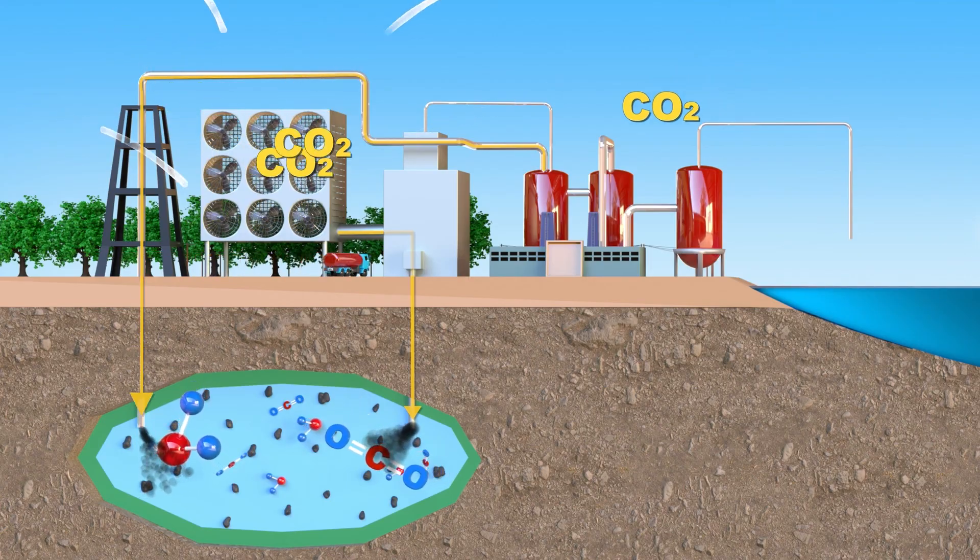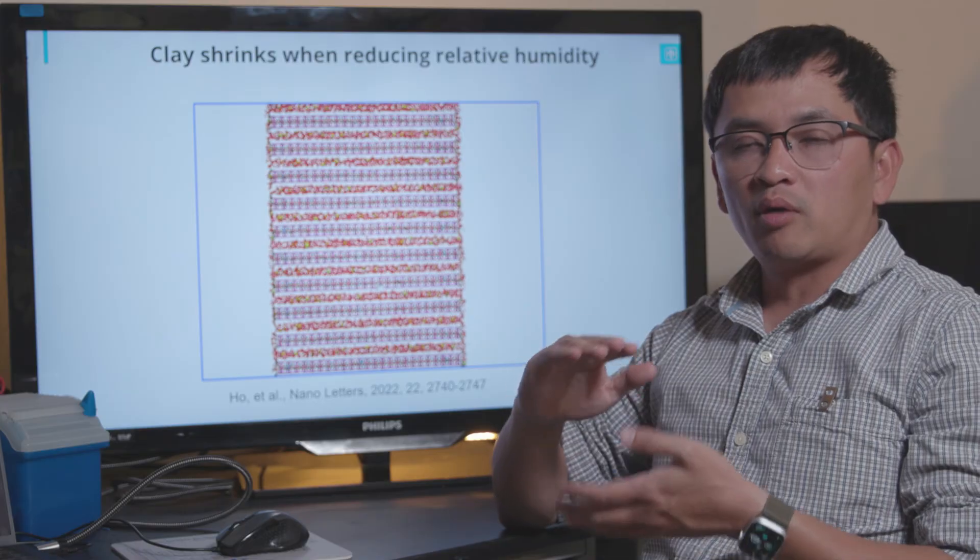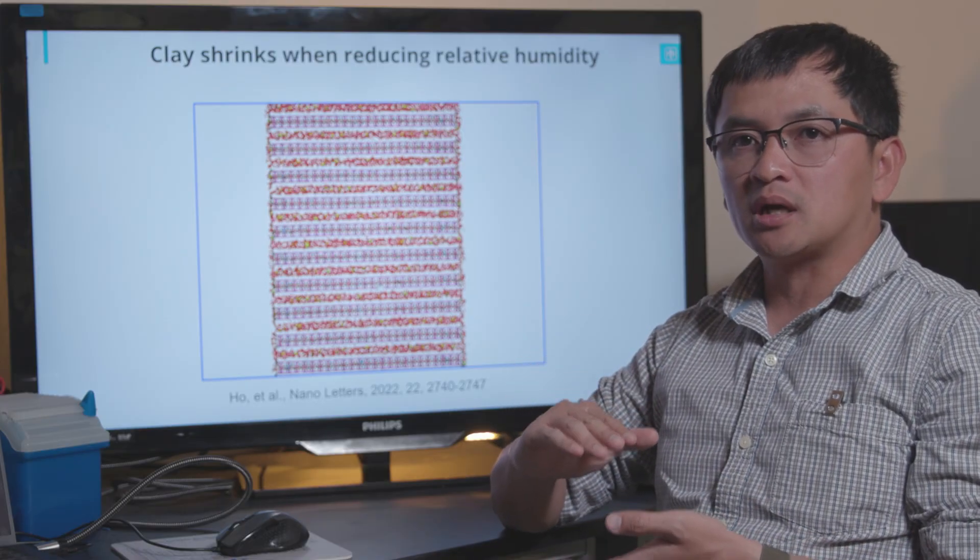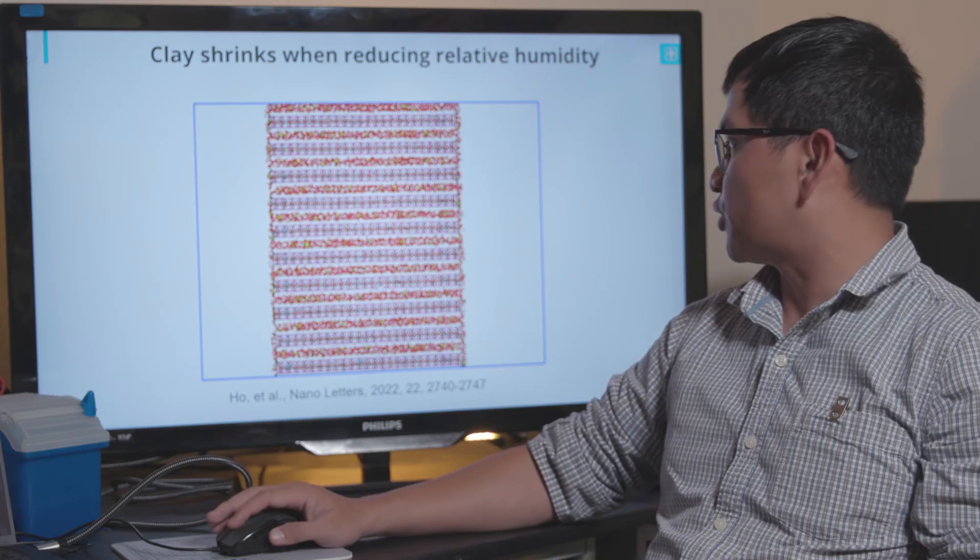In addition, the moisture in the air actually helps the whole process. When we reduce the relative humidity, the clay loses water and shrinks. When it shrinks, it squeezes all the water and CO2 out of the nanopores.